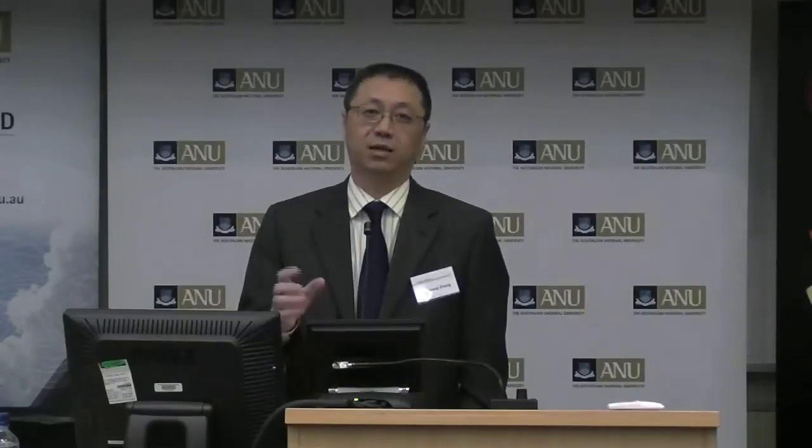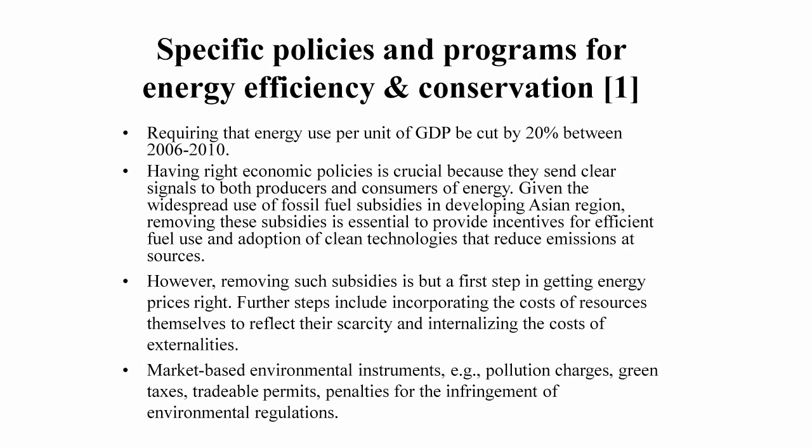For that reason, the government set — for the first time — a target for reduced energy intensity in the 11th Five-Year Plan, requiring a cut in energy intensity by 20% from 2006 to 2010. To achieve that goal, the government implemented a number of policies — some more broad-coverage, some more specific. These include trade policies previously used for promoting exports, but now also being applied for energy conservation and carbon emissions reduction.